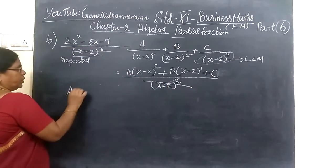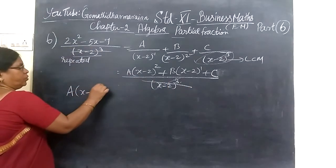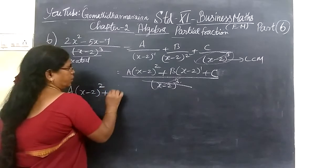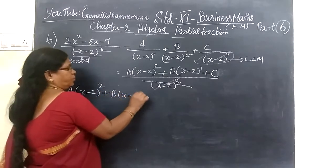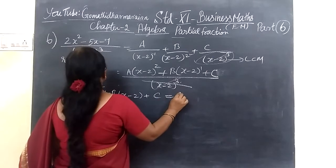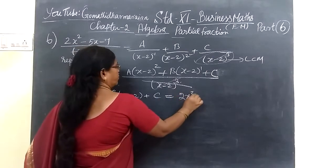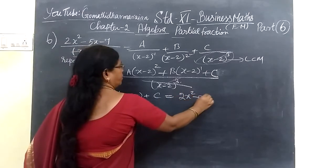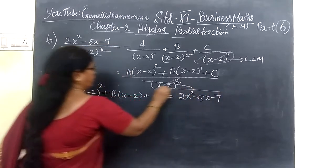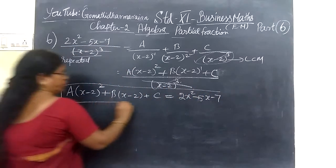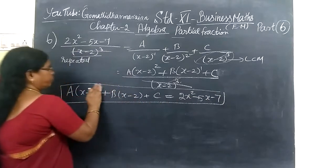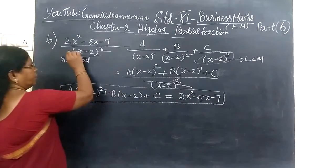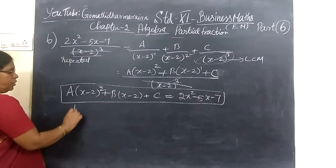Here this will be a cancel. So A bracket x minus 2 whole square, then B bracket x minus 2, then C. This is equal to the numerator here, 2x squared then minus 5x minus 7. This will be a box put together. The denominator is canceled. Now what is the procedure?